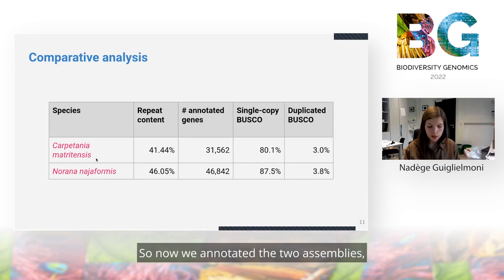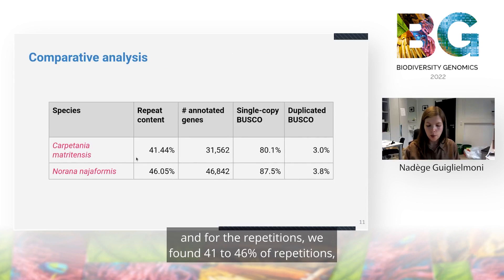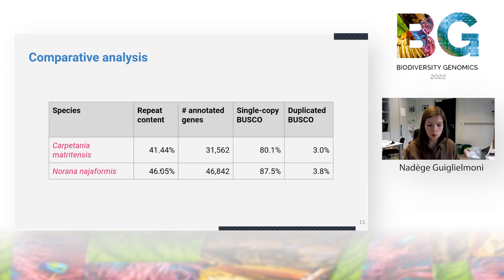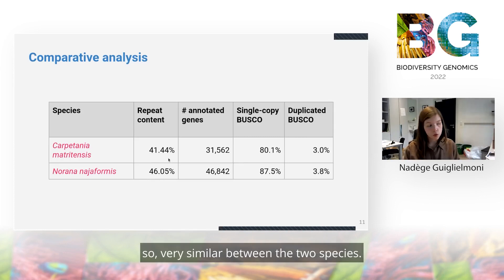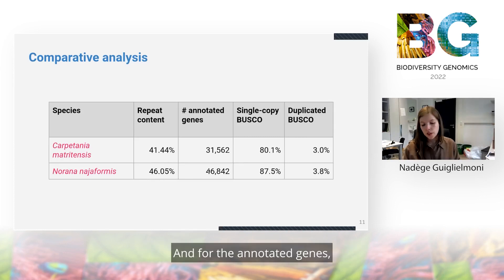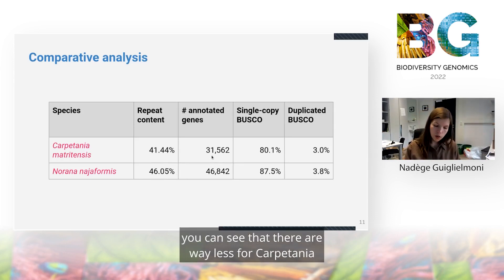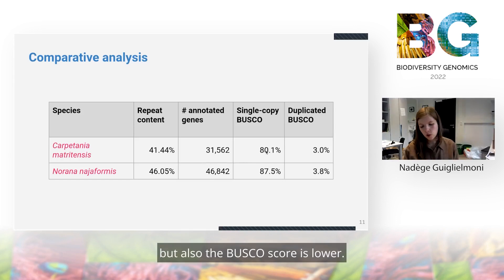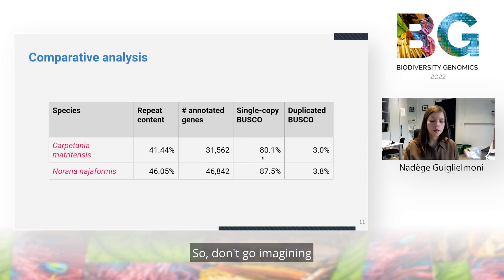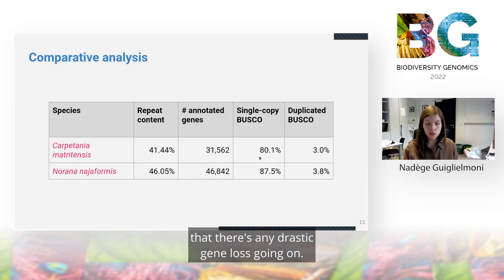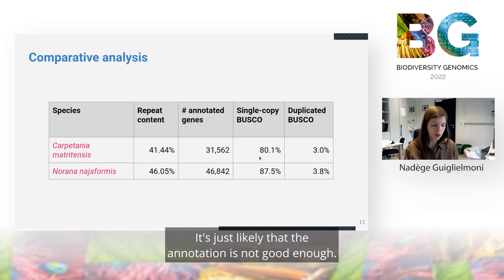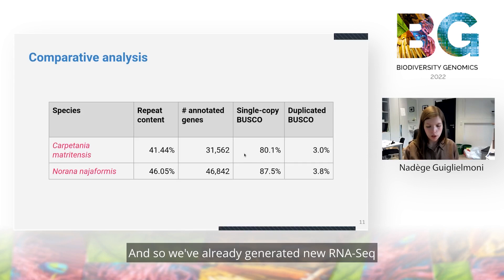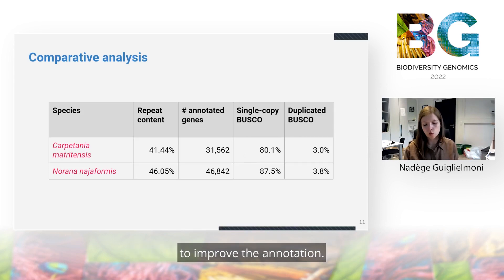We annotated the two assemblies and found 41 to 46 percent repetitions — very similar between the two species. For the annotated genes, there are fewer for Carpetania than for Norana, and the BUSCO score is also lower. But don't imagine any drastic gene loss is going on — it's likely that the annotation is not good enough. We've already generated new RNA-seq data to improve the annotation.